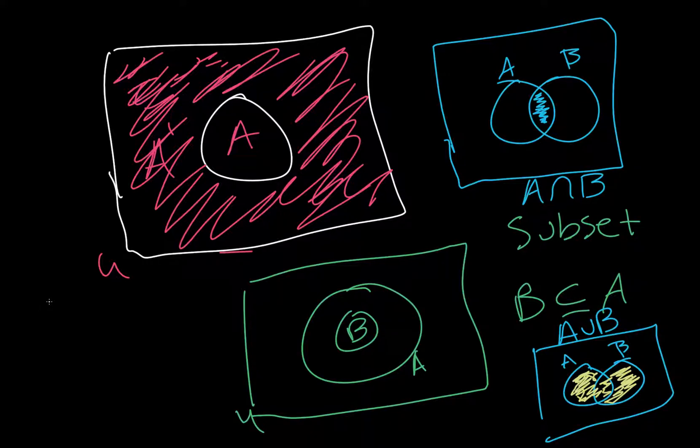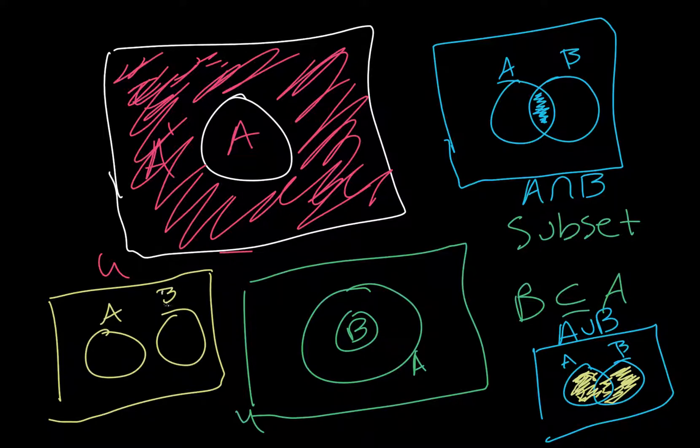And then the last thing is two disjoint sets, or mutually exclusive. So, this is when we have A and B, they have no intersection. And so, we say the intersection of A and B is the empty set, which is that symbol right there. All of these have the universal set, which is represented by the rectangle on the outside. That's just some prerequisite stuff. And then we'll move on to example six.